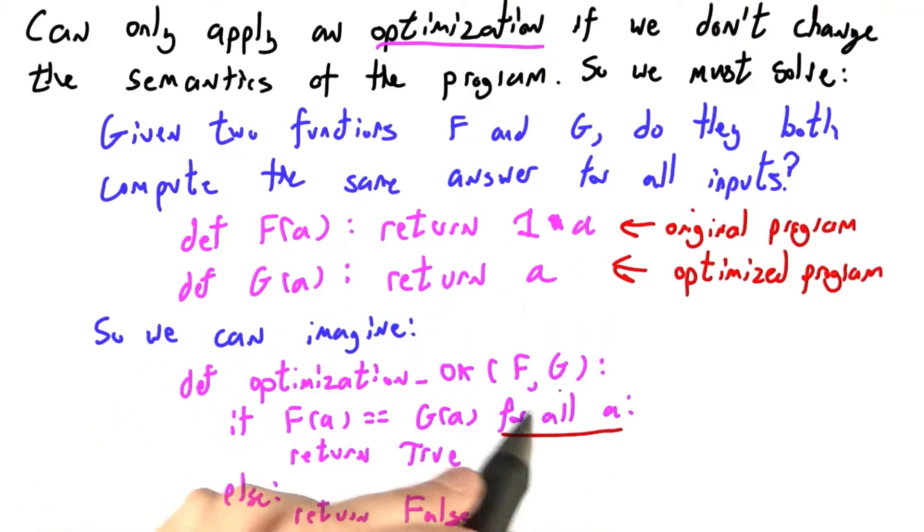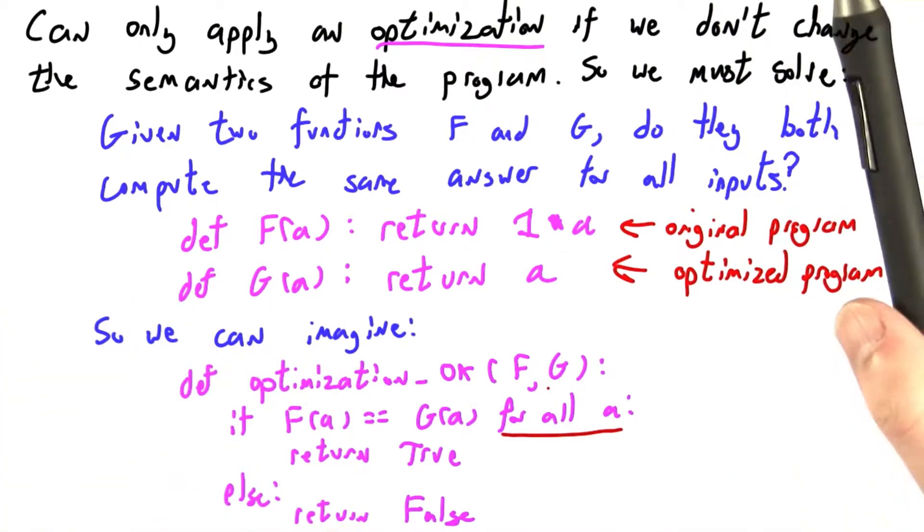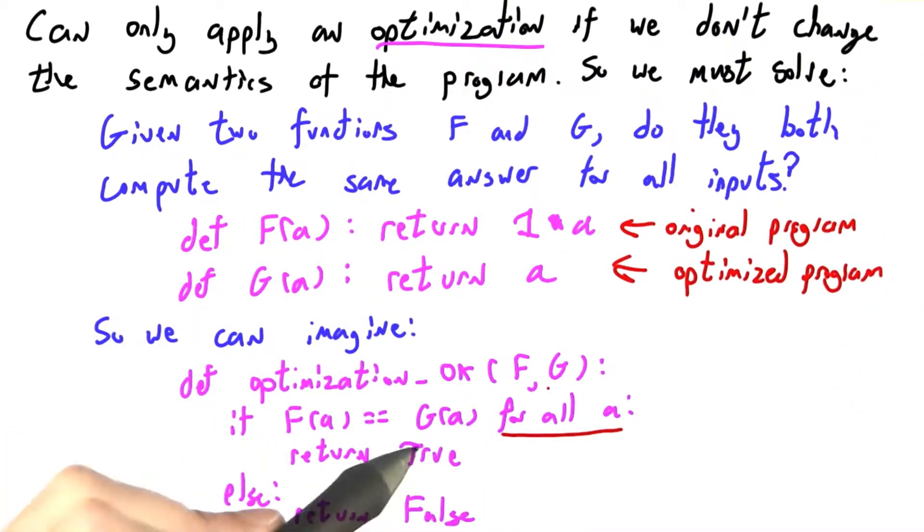Somehow we're going to try this out. Maybe we look at their source code, we apply these rules that we did previously, maybe we test it out on a bunch of inputs. Somehow we come to the conclusion that f of a is always equal to g of a. If so, we return true, and the optimization is okay.